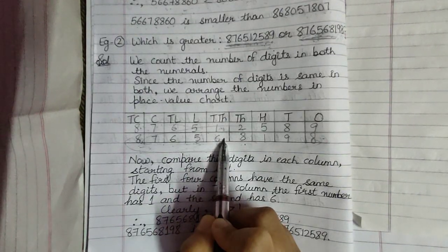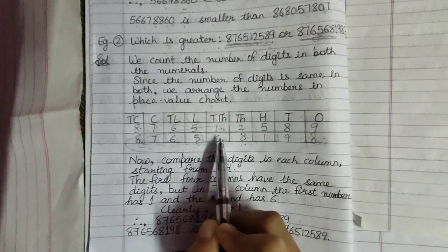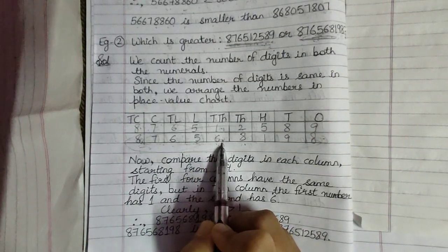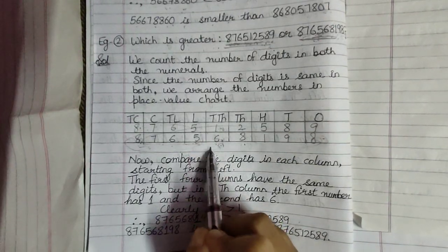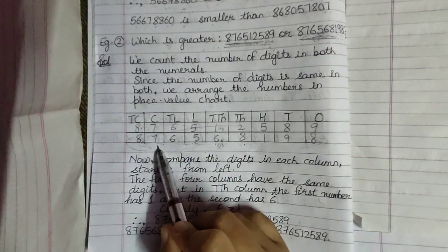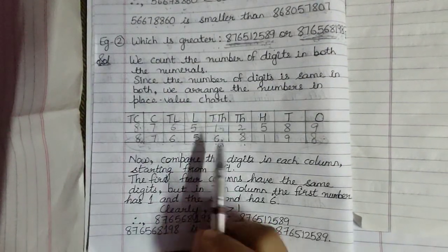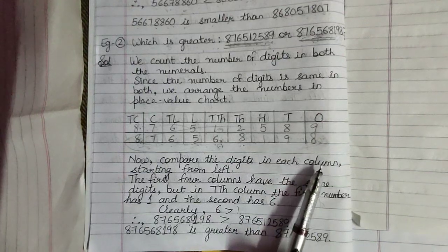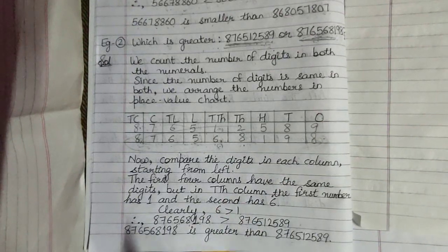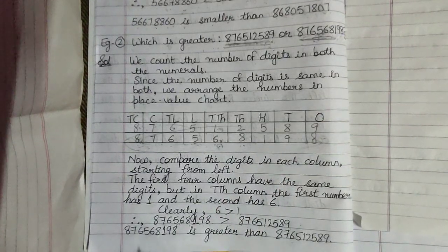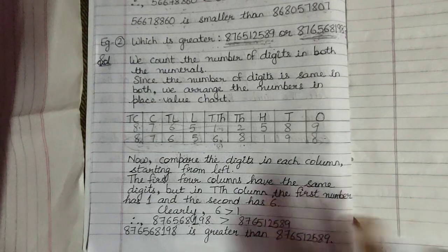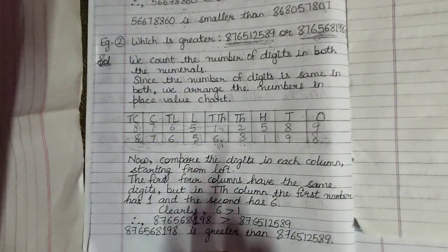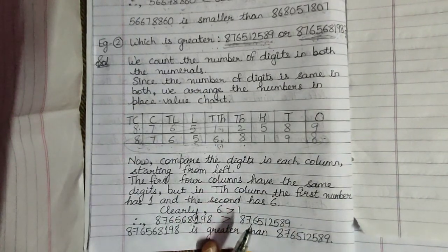therefore our second number, 87,65,68,198, is greater. Please look at this carefully and I hope it is clear to you.